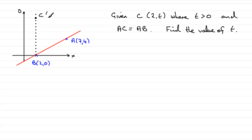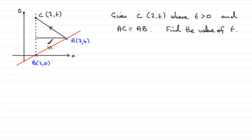If we mark C up here, we know it's got coordinates (2, T). But what's T going to be? Well, we've got essentially an isosceles triangle — this length is exactly the same as this length. All isosceles triangles have a line of symmetry through the middle, so this length must be the same as that length. If this is four units above here, this must be another four units, making a total of eight units.